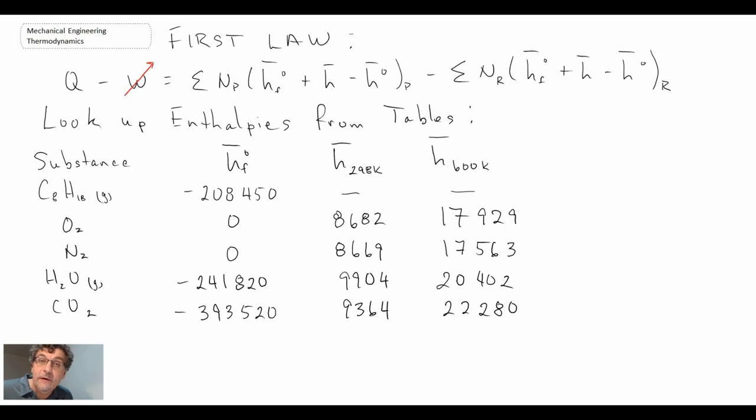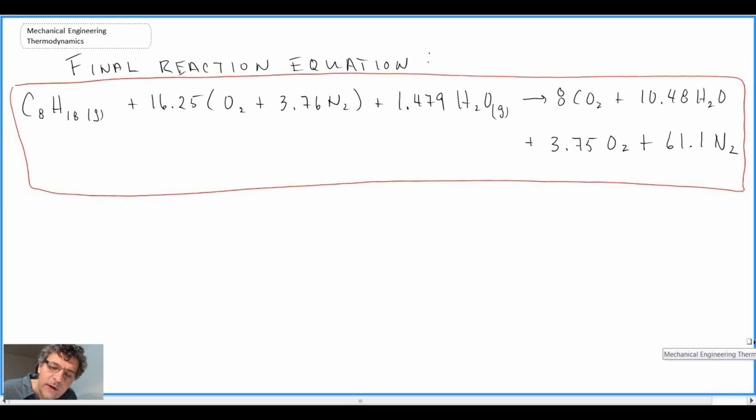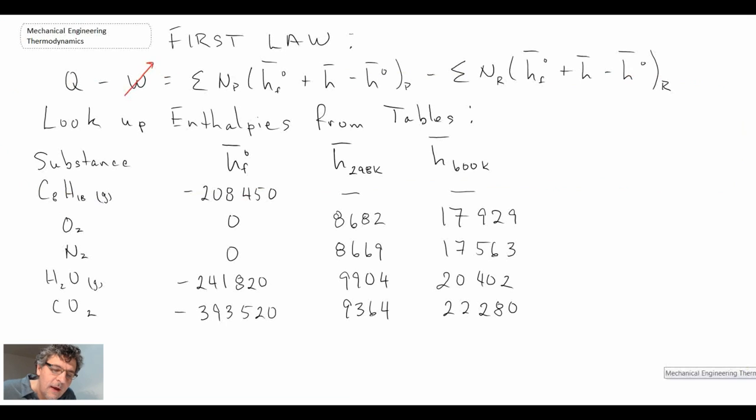So those are all of the different values that we'll be using to solve this. What we're going to do is take these values and plug them into the first law that we have, coupled with knowing information about the reaction. Remember, this is our final reaction equation, so we know the number of kilomoles for all of the different substances we have within our reaction. There is our table. So what we will now do is proceed with what I call bookkeeping. It's basically straightforward applying the first law and plugging in all the different values.